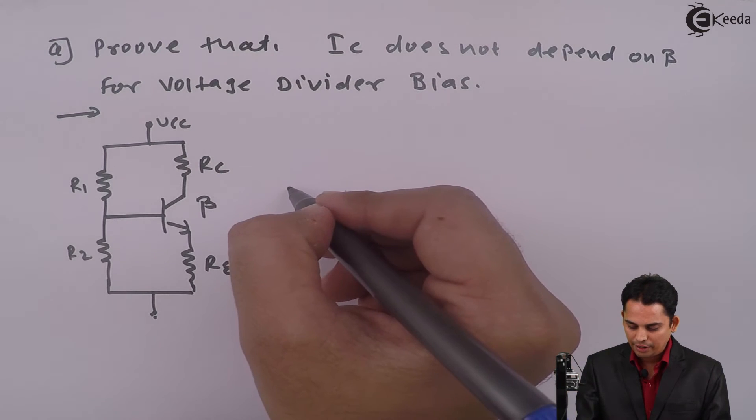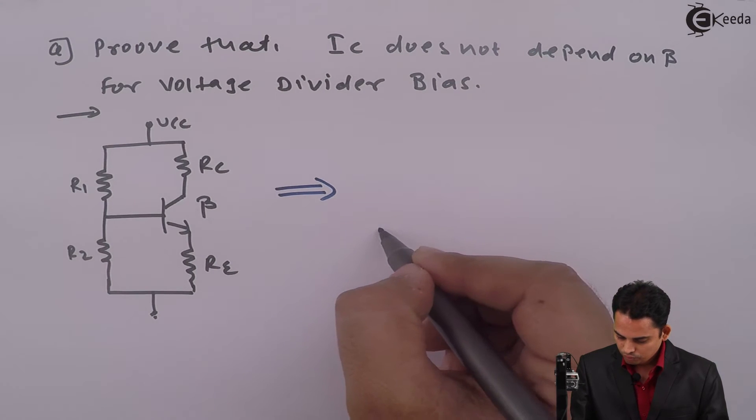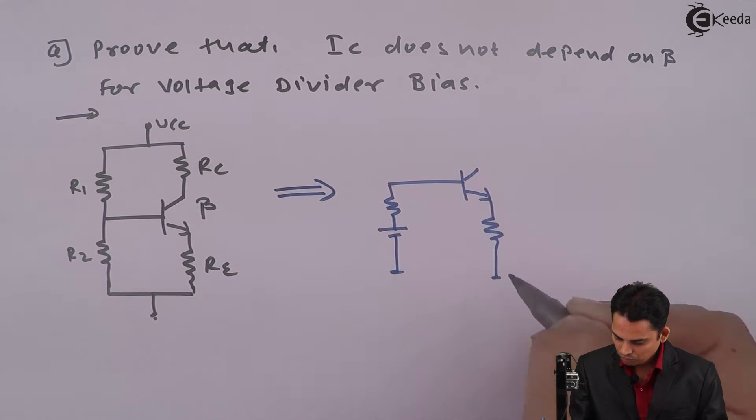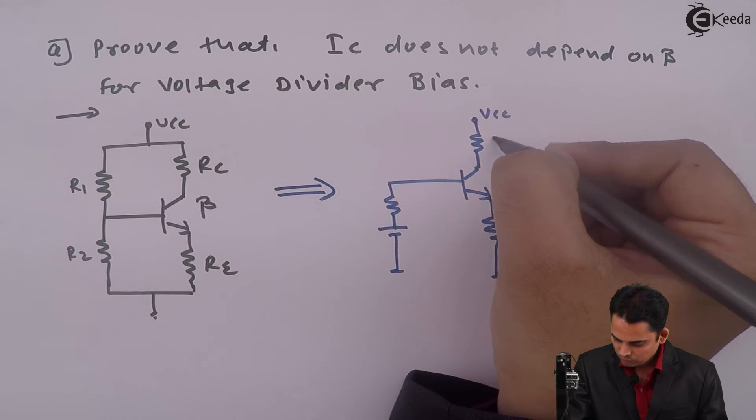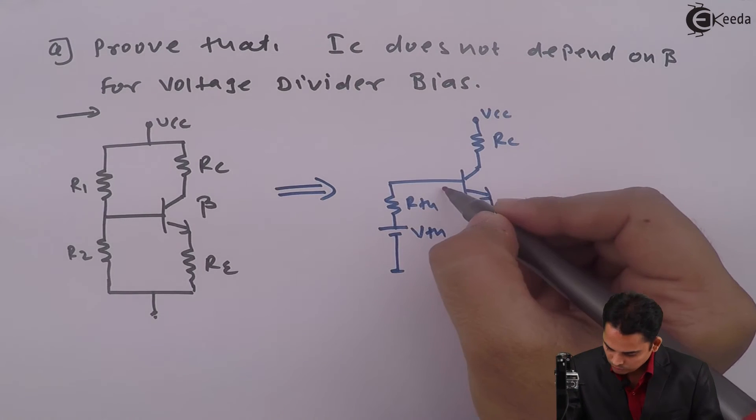So we will apply Thevenin's and redraw the circuit. This kind of circuit diagram we will get when we replace the base side with the Thevenin equivalent circuit.